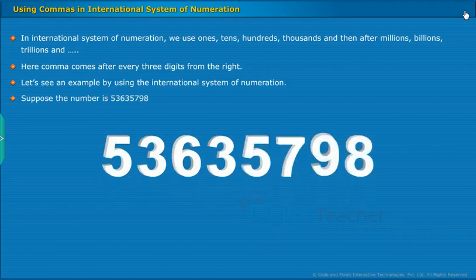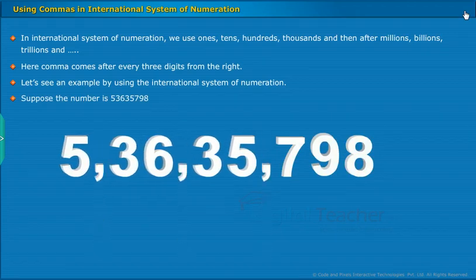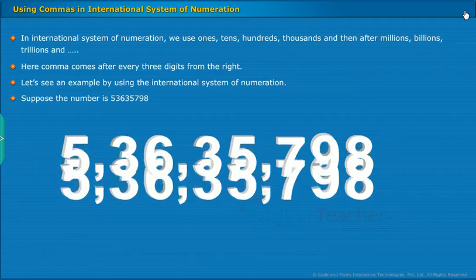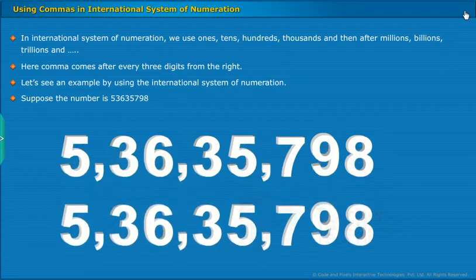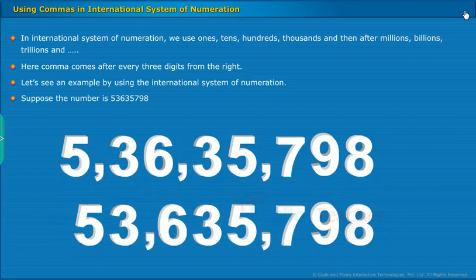In Indian system of numeration, it can be read as five crore, thirty-six lakh, thirty-five thousand, seven hundred ninety-eight. In international system of numeration, it can be read as fifty-three million, six hundred, thirty-five thousand, seven hundred ninety-eight.